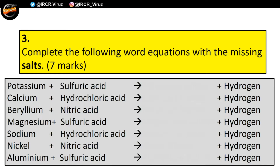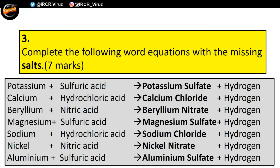Task number three: complete the following word equations with the missing salts — seven marks. As always, pause the video and get your answers, then we'll mark them. So we're back — let's check the answers. First one would be potassium sulfate, then calcium chloride, beryllium nitrate, magnesium sulfate, sodium chloride, nickel nitrate, and aluminum sulfate. If you got seven out of seven — top marks!